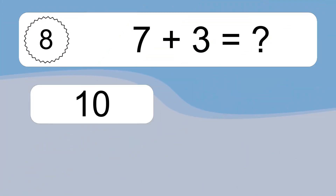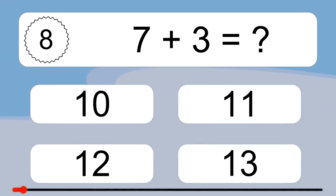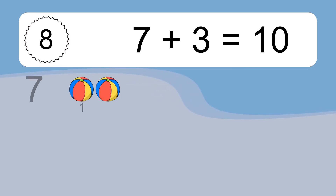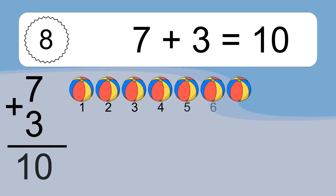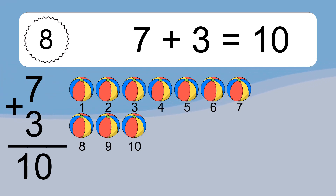7 plus 3 equals what? 7 plus 3 equals 10. Let's count it: 1, 2, 3, 4, 5, 6, 7, 8, 9, 10.